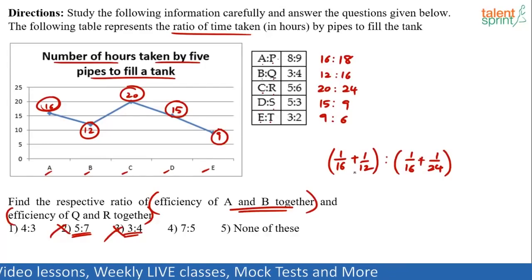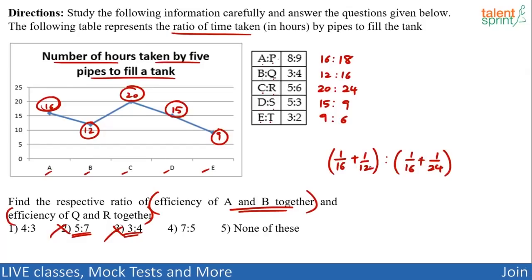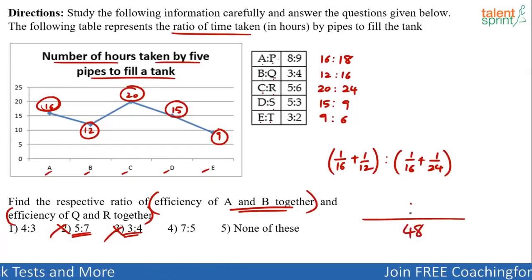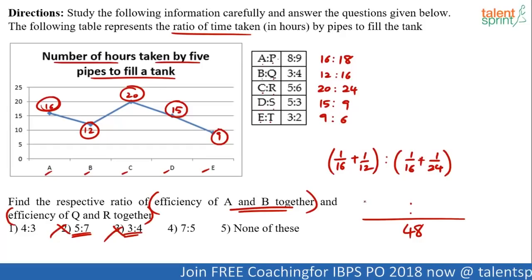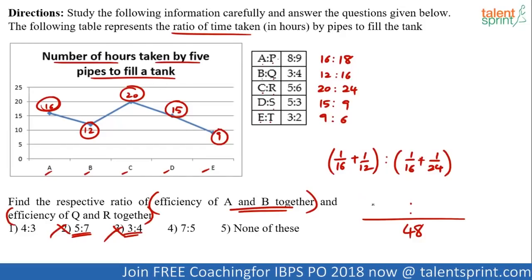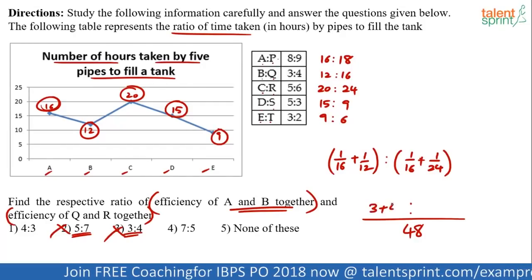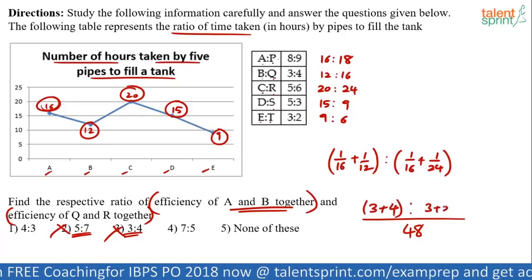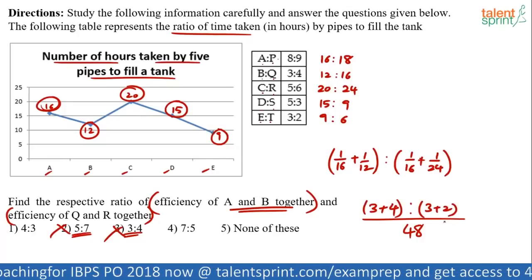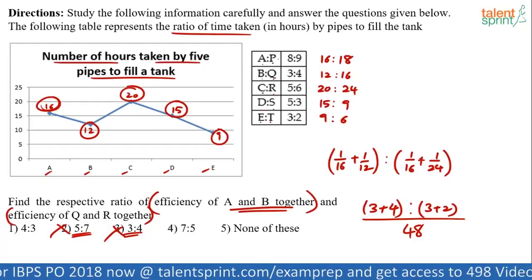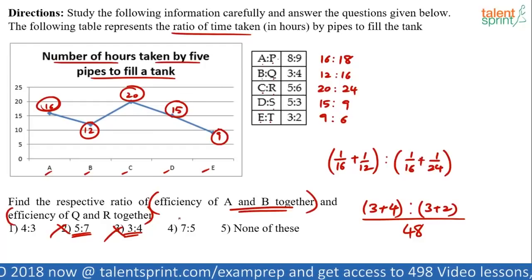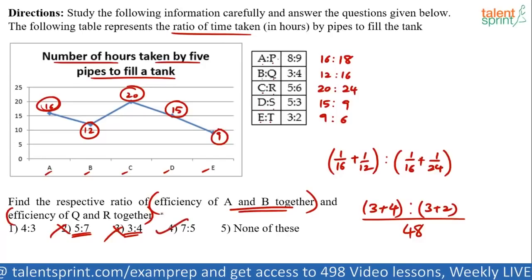Now, simplify now. I think I can take a common multiple 48 everywhere. The common multiple is 48 everywhere. That makes life easy. 16 goes how many times? 3 plus 12 goes 4 times. 16 goes how many times? 3 plus 2 times. 7 is to 5. So, this is 3 plus 4, 7. This is 3 plus 2, 5. Option 4 is the answer.